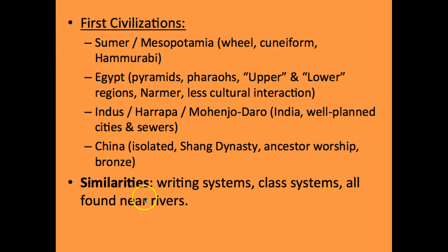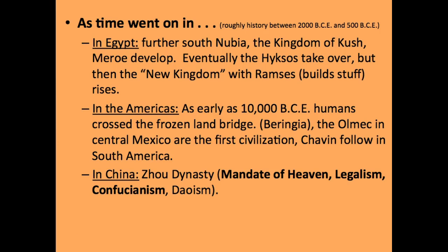In other parts of the world, like the Americas, civilizations start as early as 10,000 BCE when humans are believed to have crossed the frozen land bridge. The Olmec in central Mexico are one of the first civilizations to spring up — they're called the 'rubber people' because they were among the first to use rubber in building, and they played the ball game that spread into several other Mexican civilizations. The Chavin also follow in South America. Further south of Egypt, you have Nubia and the Kingdom of Kush, and Meroë, developing at this time.